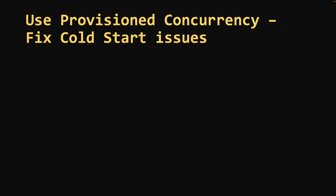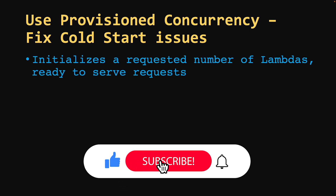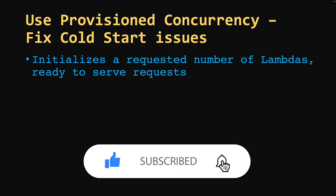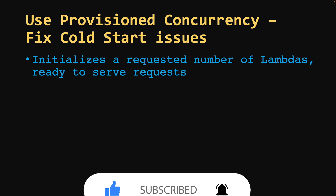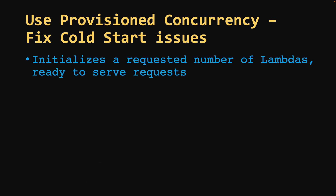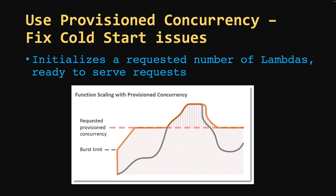Next is provisioned concurrency. If you're working with serverless functions, you might be facing cold start issues. Cold start happens when Lambda receives a request for the first time and it takes some time to prepare the execution environment. But in critical production systems, especially when your app is being used by end users, you cannot let users wait for cold start initialization. Provisioned concurrency initializes a requested number of Lambdas ready to serve requests with low latency and without cold start issues.